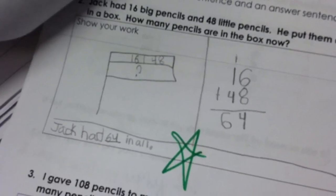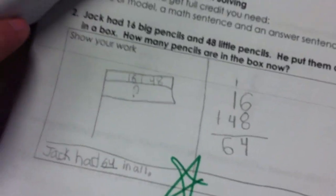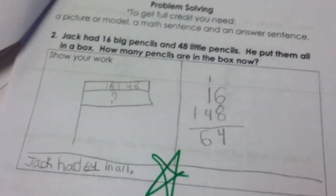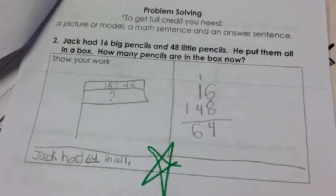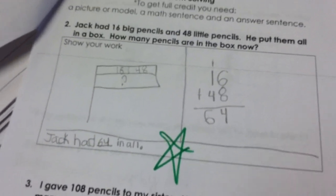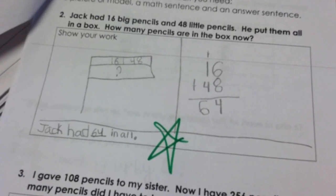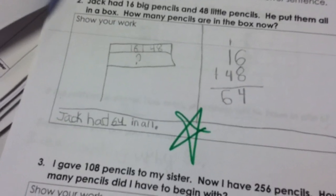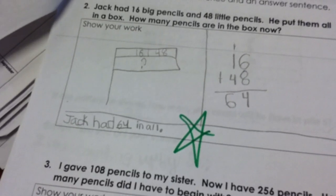So in this particular case, look at this. Here we've got a story here about Jack who has 16 big pencils and 48 little pencils, and he put them all in a box. How many pencils are in the box? So this child you've just described that has trouble with place value was able to do this independently. Yes, completely on their own.